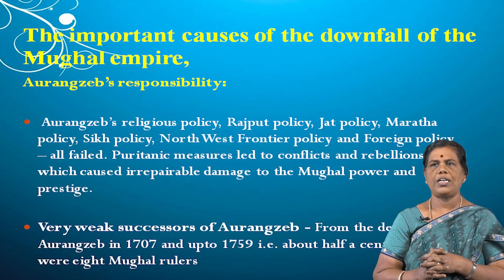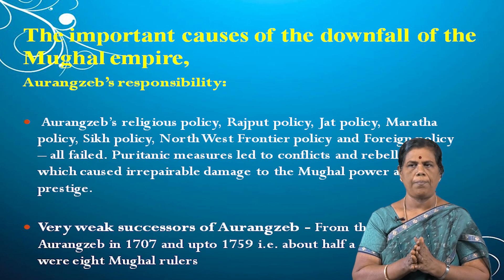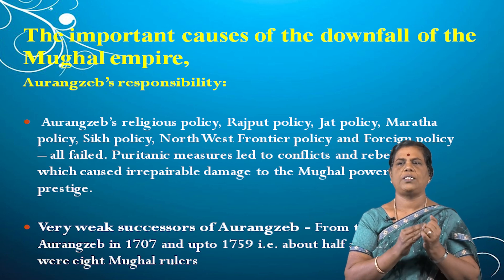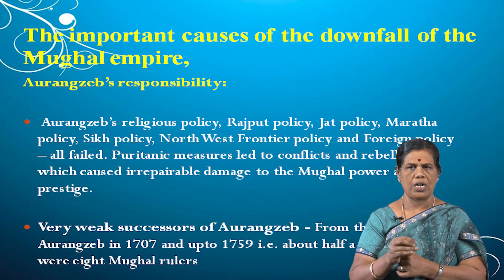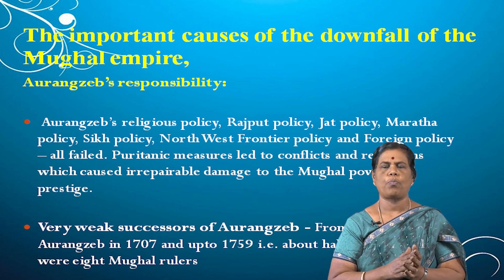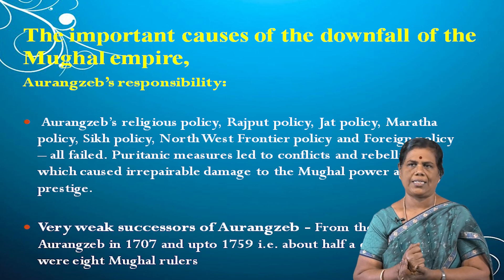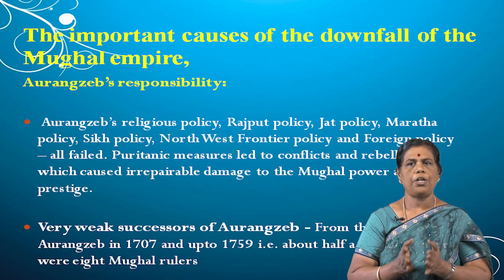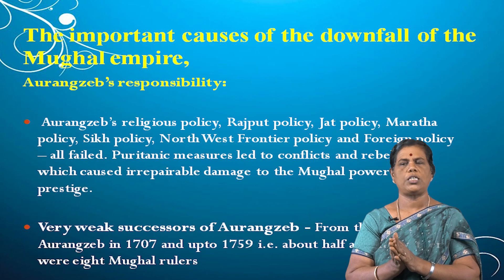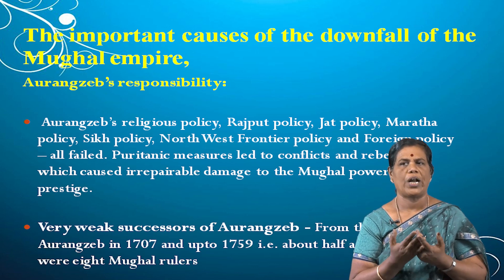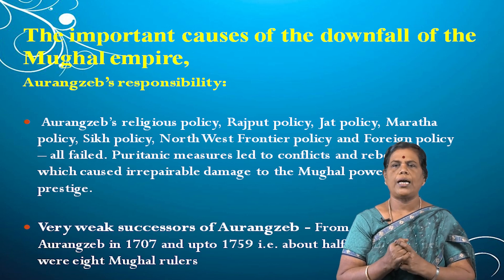What were the important causes of the downfall of the Mughal Empire? First: Aurangzeb's own responsibility. He followed policies not liked by the Rajputs, Jats, Marathas, and Sikhs. His North West Frontier policy and foreign policy all failed. In religious policy, he reimposed the Jizya tax and demolished many temples, which was not liked by the people of India, mainly Hindus. His oppressive policy towards the Rajputs raised revolts against him.